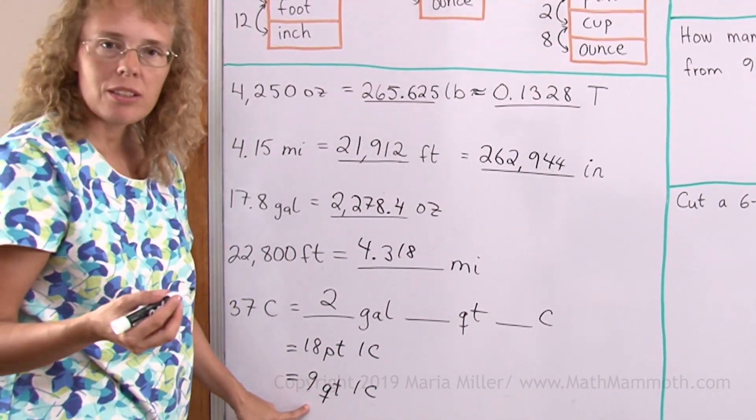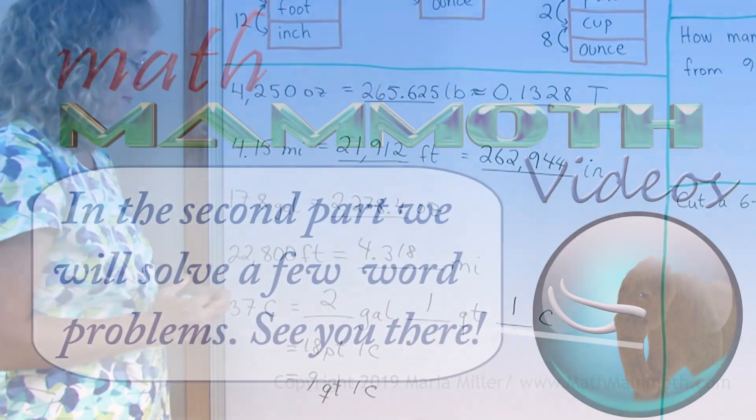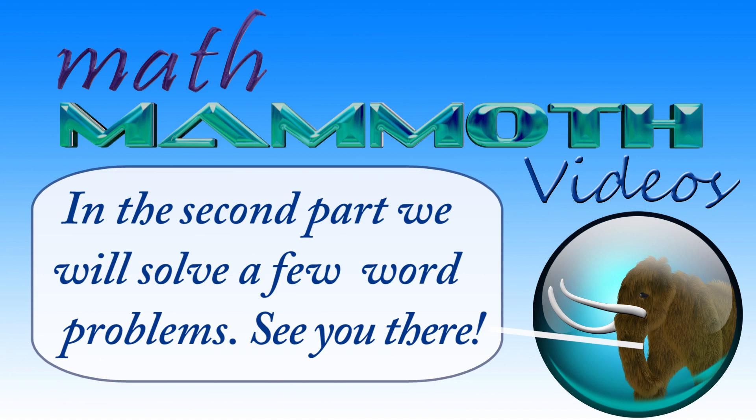And 2 gallons is 8 quarts. So there's one quart left over and then this leftover cup there too. That way. Here we go. Here it is in the courts.